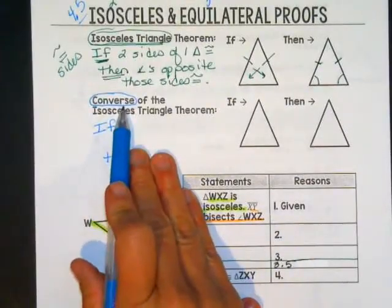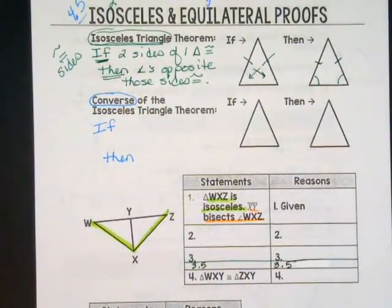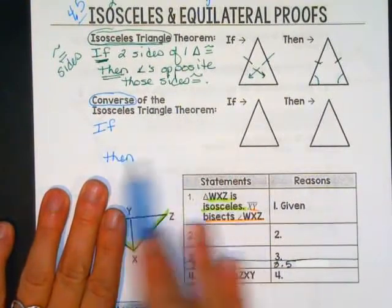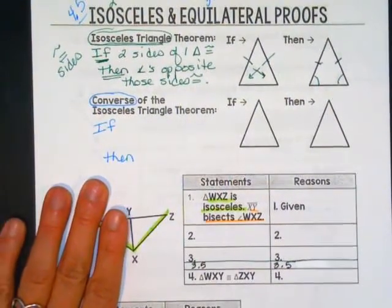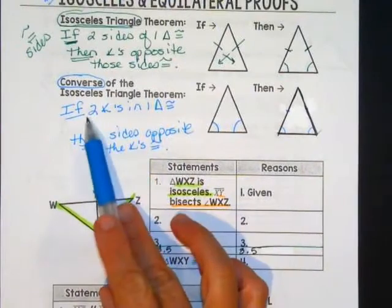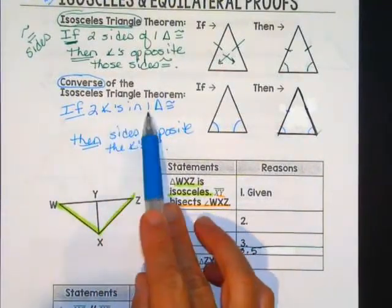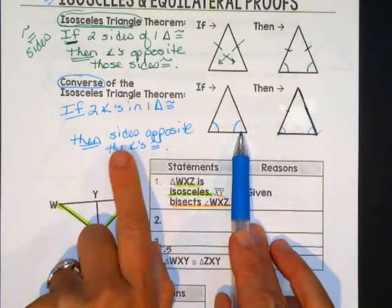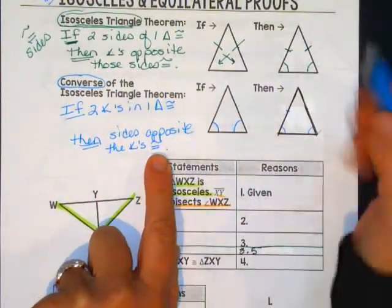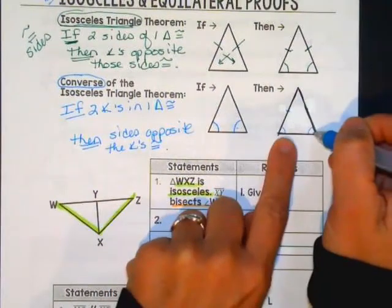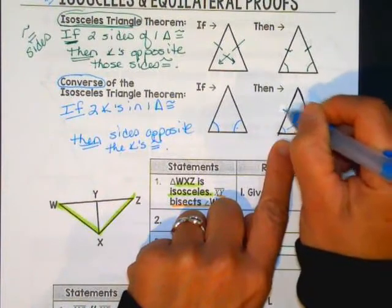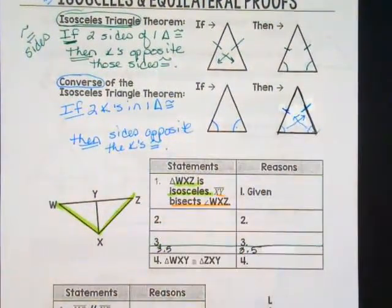The converse is going to take the hypothesis and conclusion and reverse them. We talked about converse a couple chapters ago. See if you can write the converse of this theorem before you continue the video. Hopefully you wrote: if two angles in one triangle are congruent, then the sides opposite those angles are going to be congruent. This theorem works forwards and backwards.